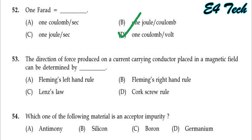The direction of force produced on a current-carrying conductor placed in a magnetic field can be determined by the corkscrew rule. That is Option D.